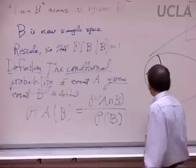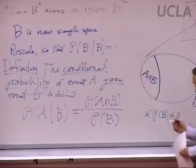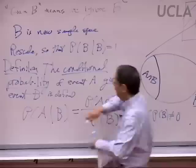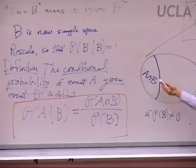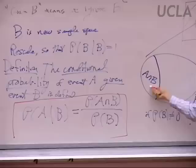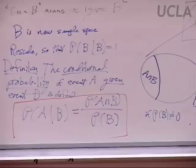For this to work, the probability of B has to be non-zero. For an outcome to have event A occur, it'll have to be in both A and B given B, and we divide by the probability of B to rescale things.